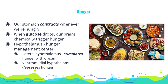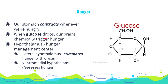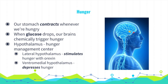When a researcher named Washburn swallowed a balloon, he discovered that our stomach contracts whenever we're hungry. But even rats who've had their stomachs removed continue to eat, so there are other ways we experience hunger. When glucose drops, our brains chemically trigger the feeling of hunger. Glucose is a form of sugar in our blood that serves as our main source of energy. The hypothalamus is the hunger management center of the brain — the lateral hypothalamus stimulates hunger with the hormone orexin, while the ventromedial hypothalamus depresses hunger. Our empty stomachs also secrete the hormone ghrelin, which increases appetite.